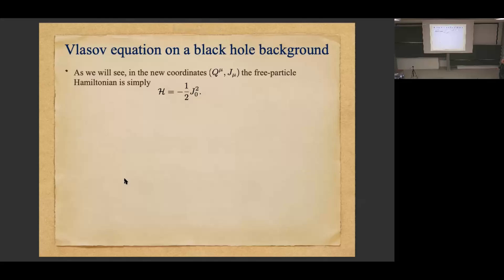By construction, the Hamiltonian in these new coordinates will just be minus one-half j_0 squared. You can see from this that j_0 is basically the mass — it tells you what the mass is; if the momentum is the mass, meaning √(p²), if you want.